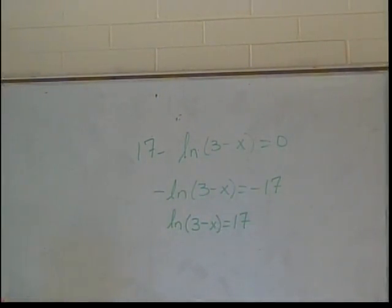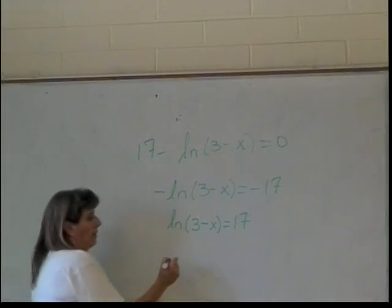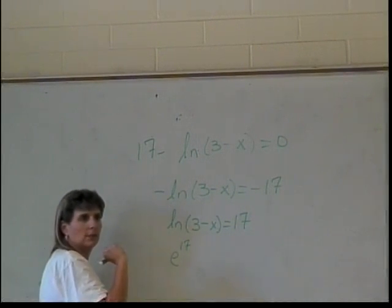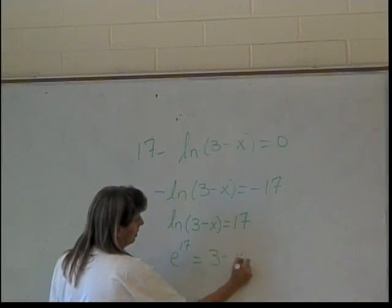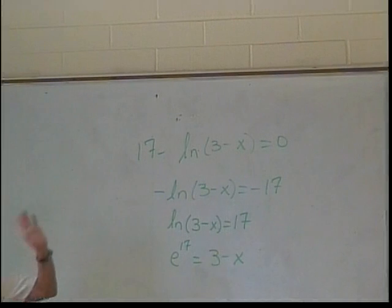And now what do I do? e to the 17th. I change to exponential form. And that's going to be 3 minus x. Am I done? No. How do I know when I'm done? When I have the x by itself. So I've got to get it by itself. And it needs to be positive when it's by itself. So what do I do now?